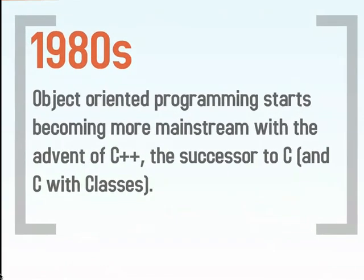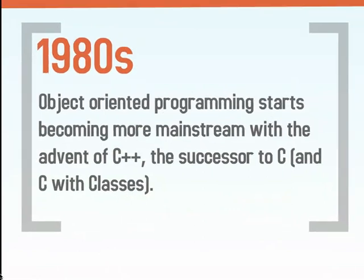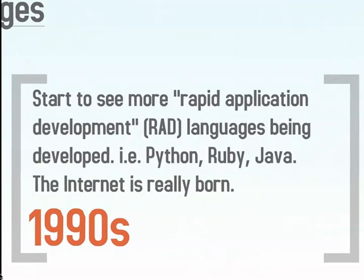Then we go to the 1980s, and this is when object-oriented programming really starts to become mainstream. We get the advent of C++ here, which was originally called C with classes and is the successor to C. In the 1990s we start to see a push for more rapid application development, or RAD, languages being developed. We see Python, Ruby, and Java — all even higher-level languages than C, where memory management is starting to be taken care of for you. The 90s is also when we see the internet actually starting to reach consumers.